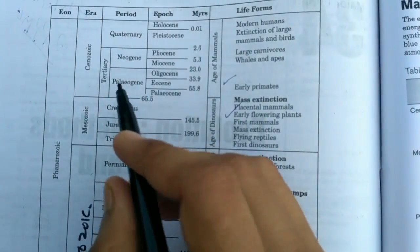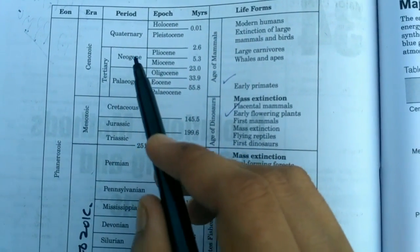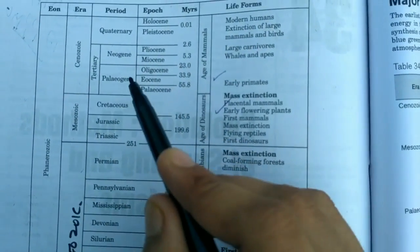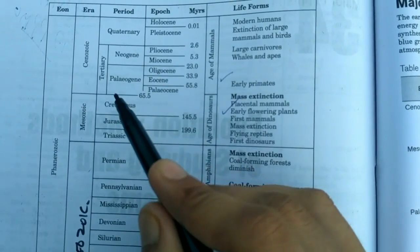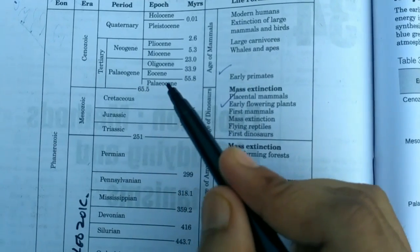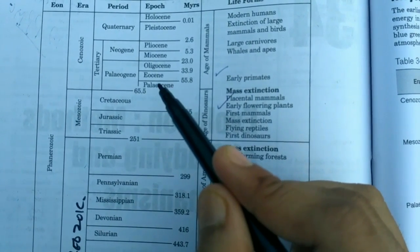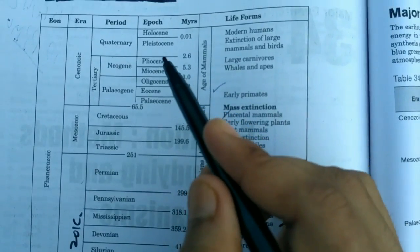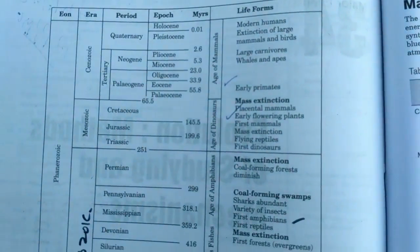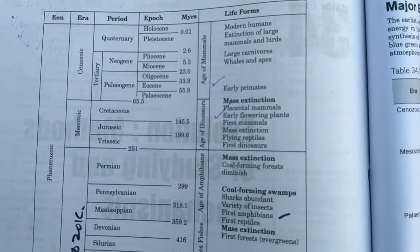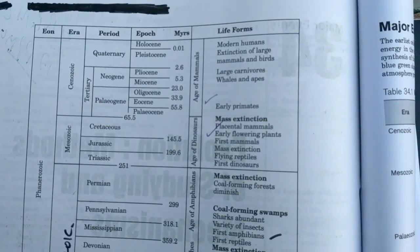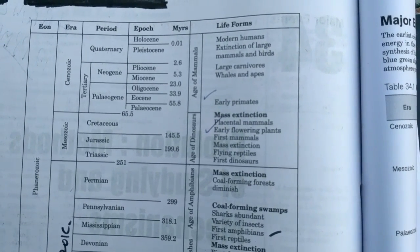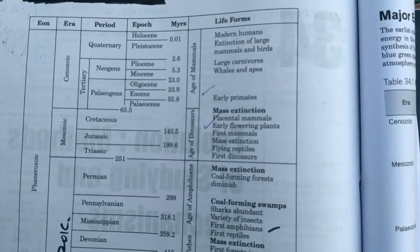Next is the Cenozoic. Cenozoic has periods Quaternary and Tertiary, subdivided into Neogene and Paleogene. Tertiary has epochs: Paleocene, Eocene, Oligocene, Miocene, Pliocene. Quaternary has Pleistocene and Holocene. Pleistocene and Holocene can be regarded as modern time. We are studying here whales and apes, large carnivorous mammals and birds, extinction of large modern humans.